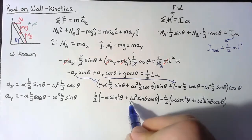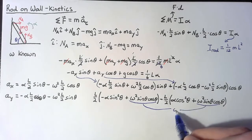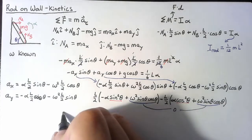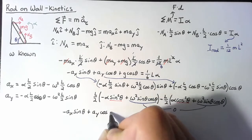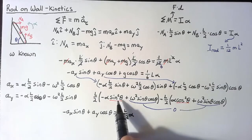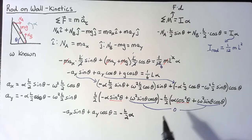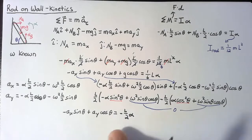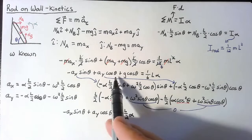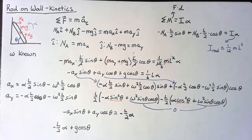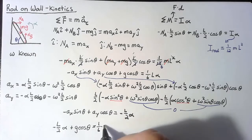The two omega squared cross terms are equal and opposite and cancel out. The alpha terms have negative sine squared theta and negative cosine squared theta, which together equal negative 1 by the Pythagorean identity. So negative Ax sine theta plus Ay cosine theta simplifies to just negative L over 2 times alpha. Plugging this back into our equation gives: negative (L/2) alpha plus g cosine theta equals one-sixth L times alpha.